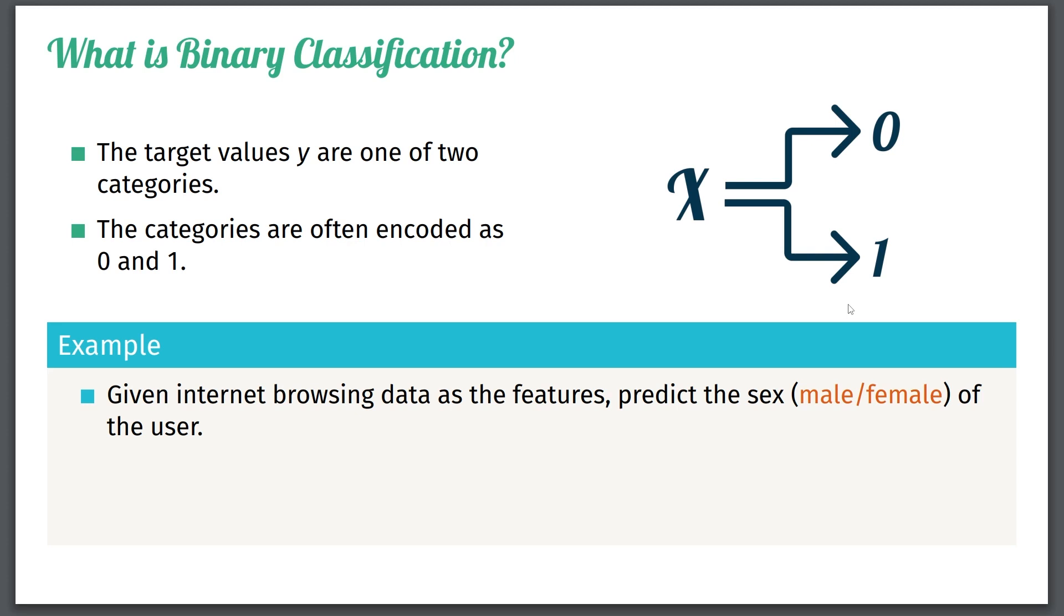Then your goal is to predict the sex, either male or female, of the user. In this case, you have essentially two target values for your outputs, male or female.